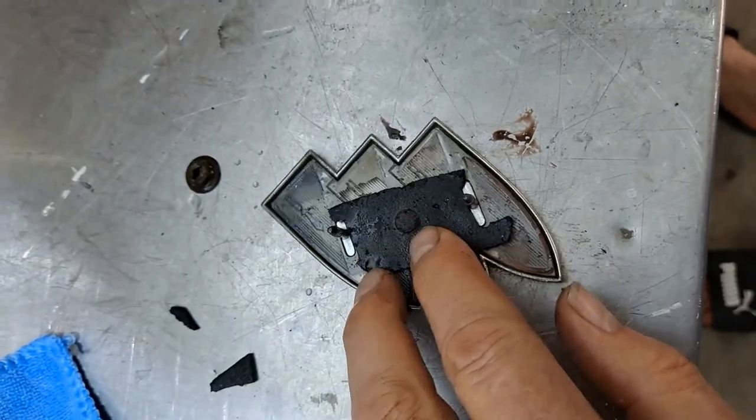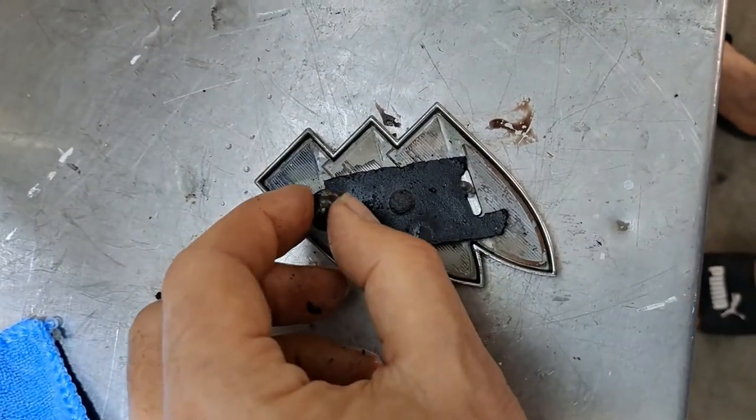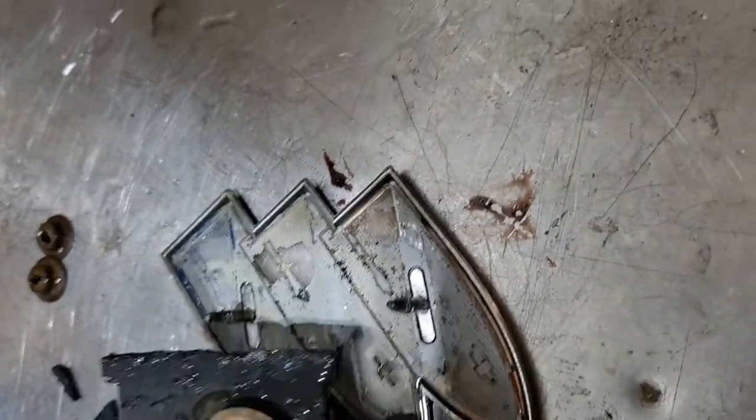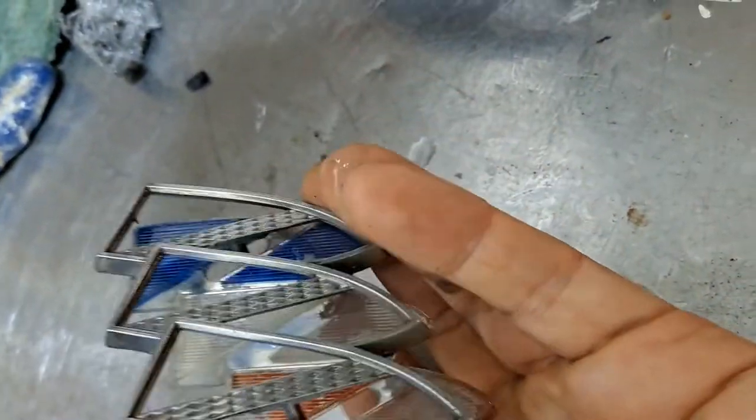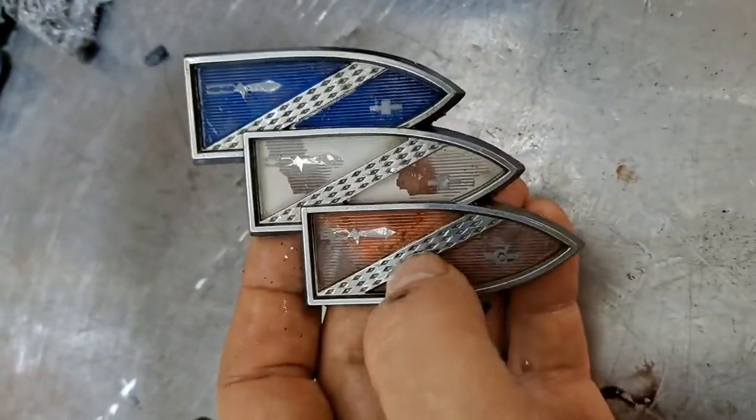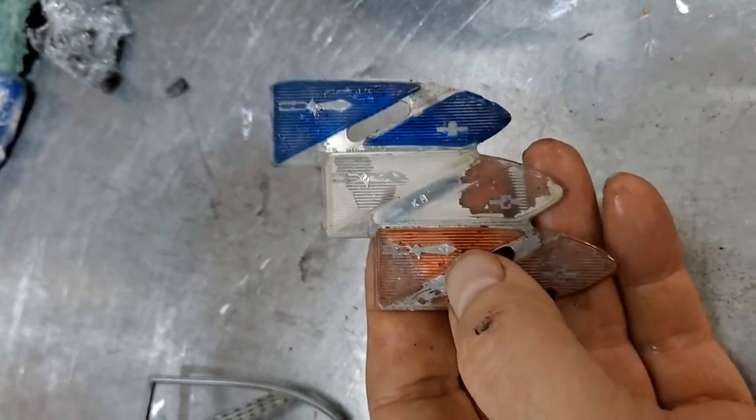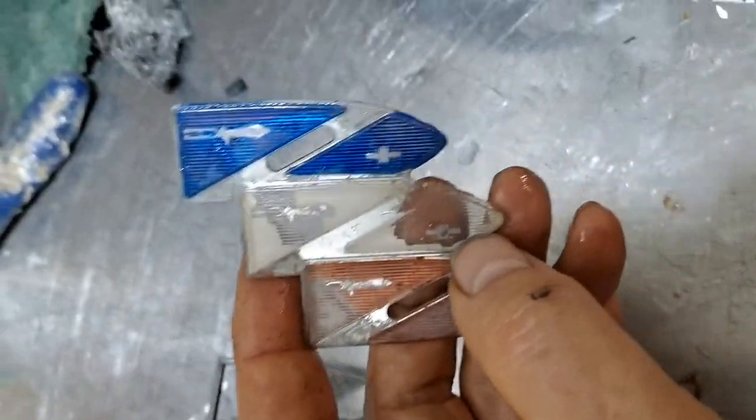Then these speed nuts were holding it onto the bracket, there's two of those, one on each of these prongs right here. Once you remove those, they pull off. You can remove the back piece. The plastic just comes away from the metal, so the metal piece, the chrome metal piece, covers this diagonal stripe.